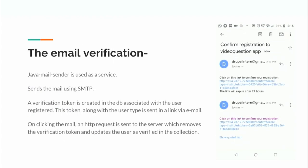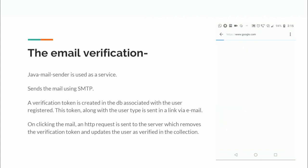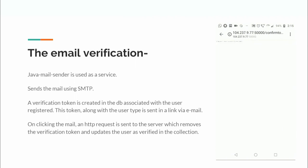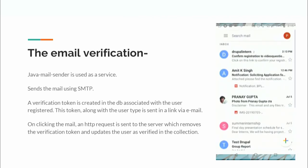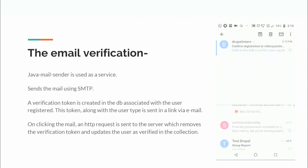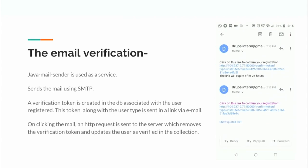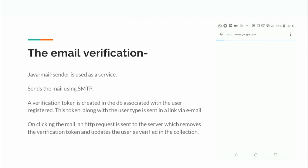For email verification we used Java Mail Sender via SMTP. A verification token is generated and a link is sent to the user containing the user type. As soon as the user clicks the link, the verification token is destroyed and the user is marked as verified in the database, allowing them to log in.